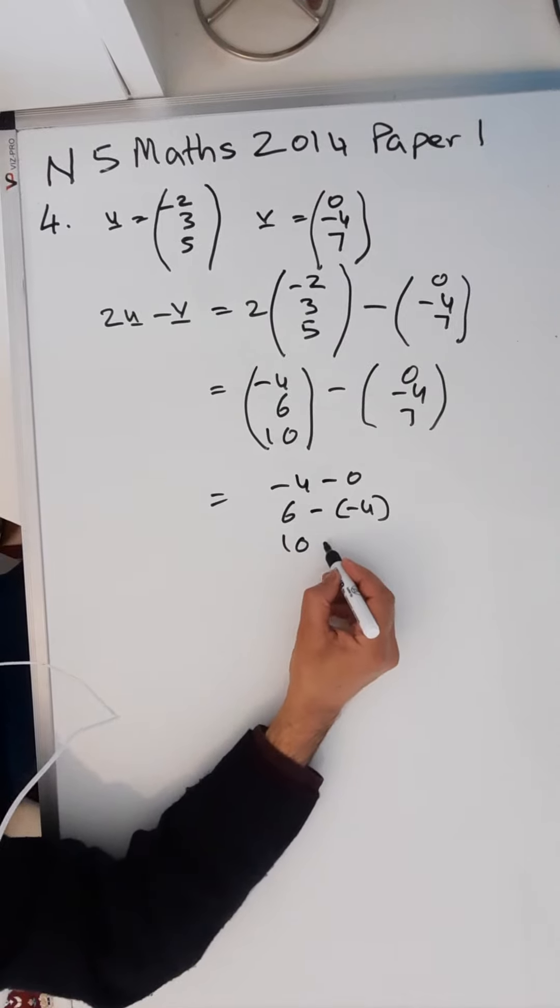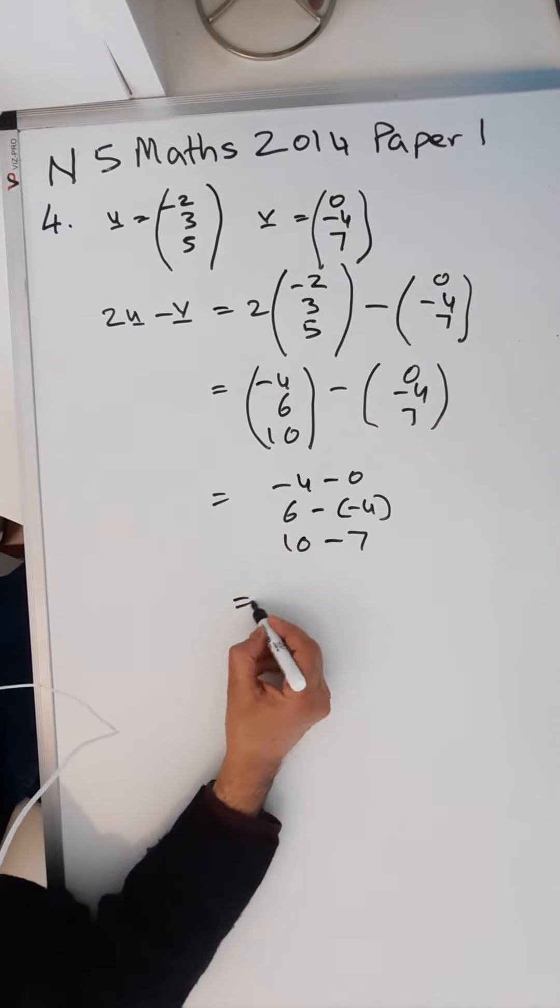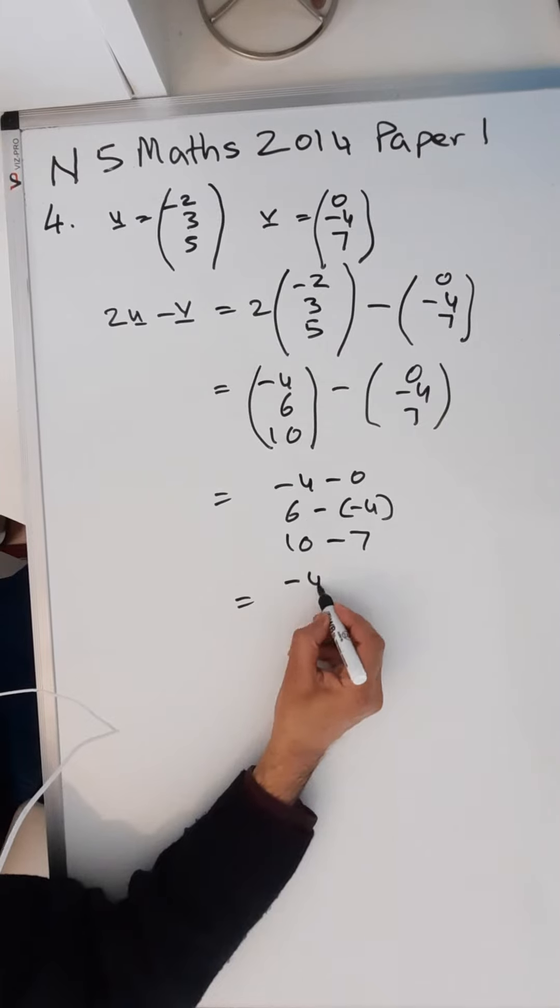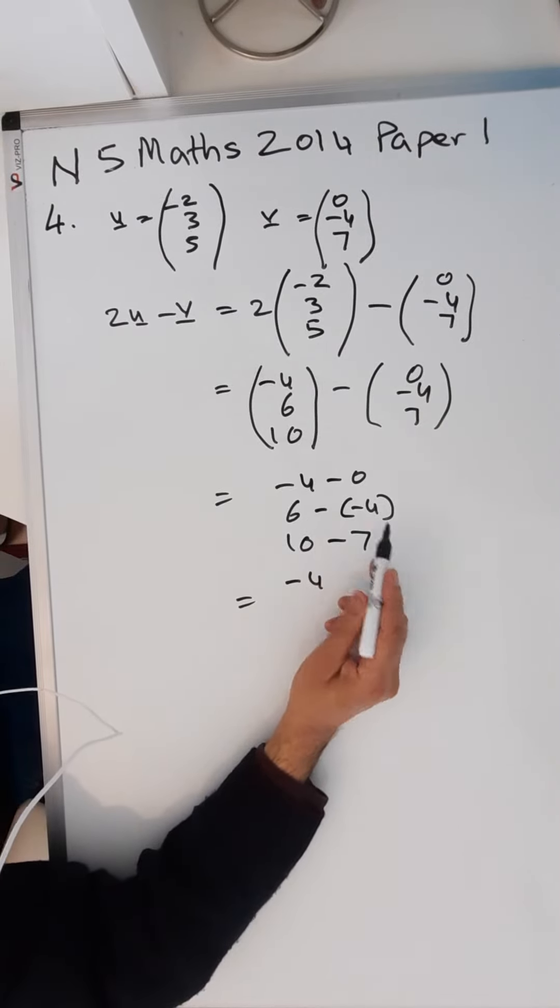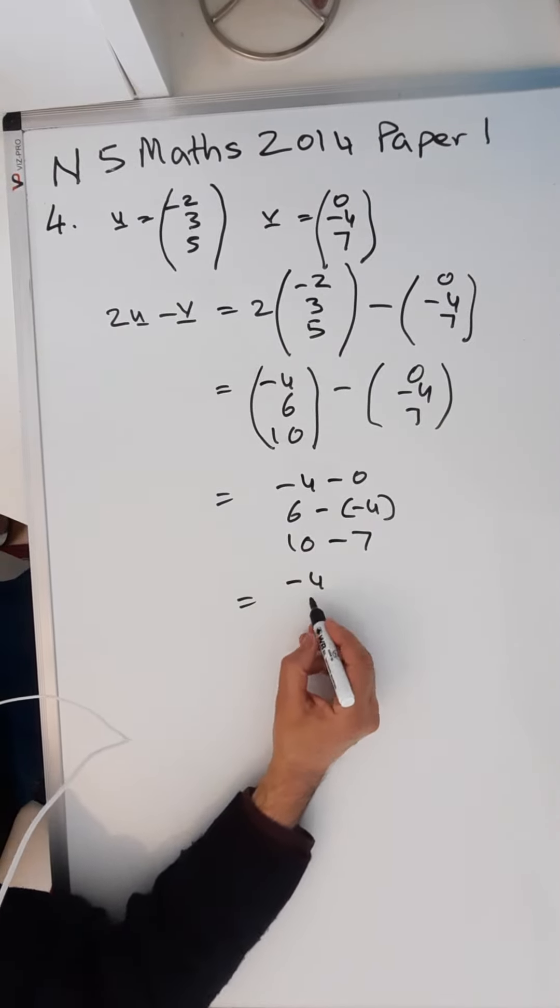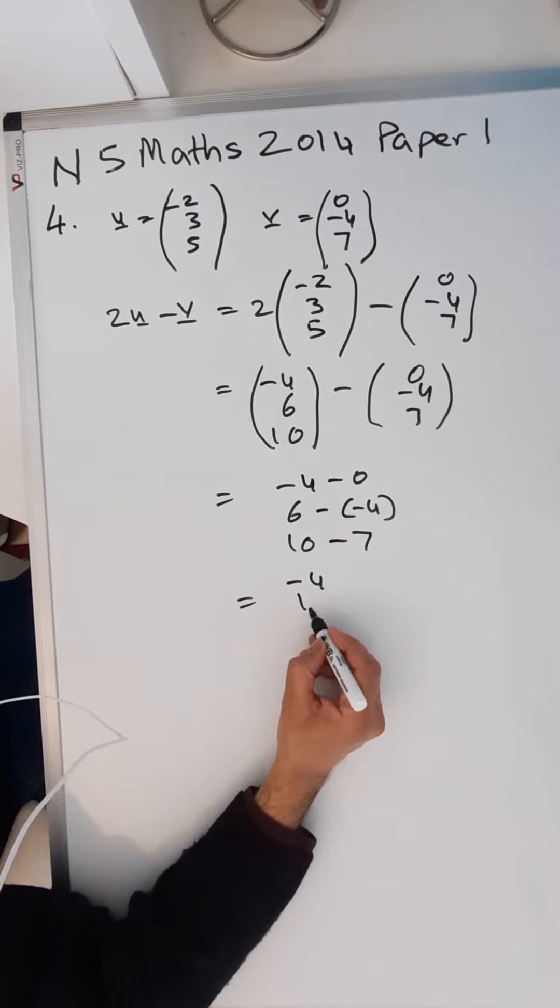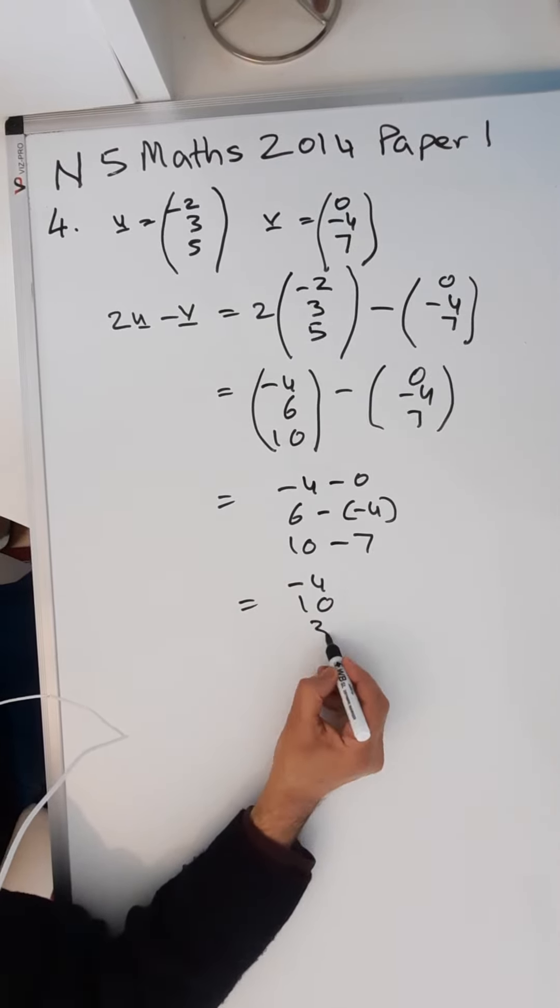And ten minus seven. So first, minus four minus zero is just minus four. Six minus minus four is six plus four—two negatives give you a positive—so that gives you ten. Ten minus seven is three.